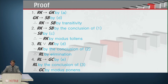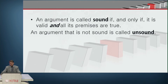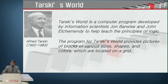An argument is called sound if and only if it is valid and all its premises are true. An argument that is not sound is called an unsound argument. At times we do have ambiguity in some languages, ambiguity in the argument. We will go through that part of ambiguity in a short time, but before that let us briefly look at what Tarski's world is.